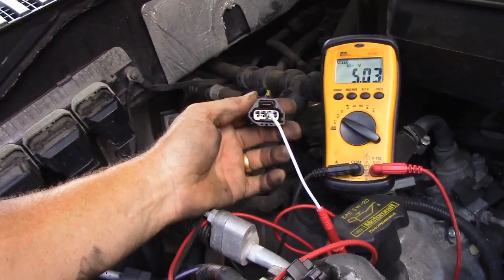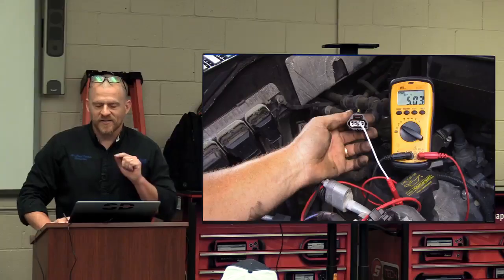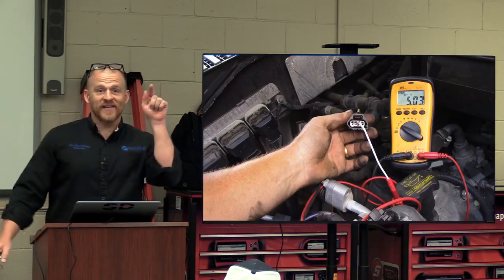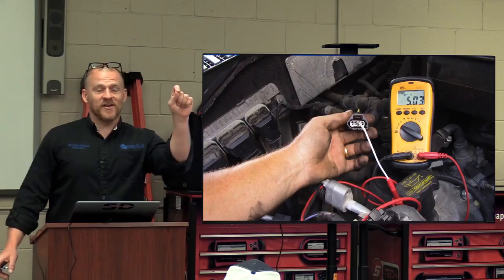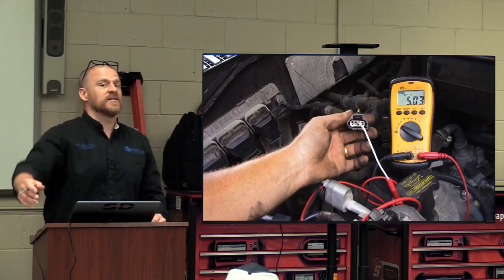So to answer your question, Caleb, on why my meter is not dropping the reference is because the second I put my meter in there, it's additional current flow. The regulator sees it, sees a momentary drop and brings the voltage back up. That's what a regulator does. Make sense?